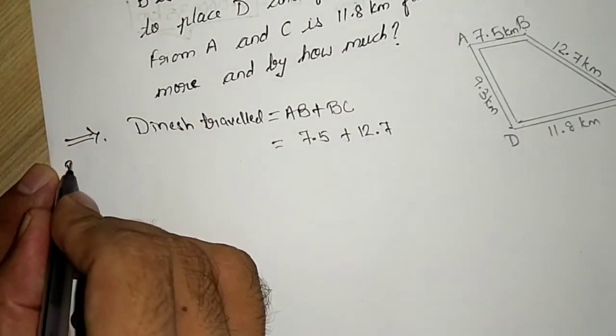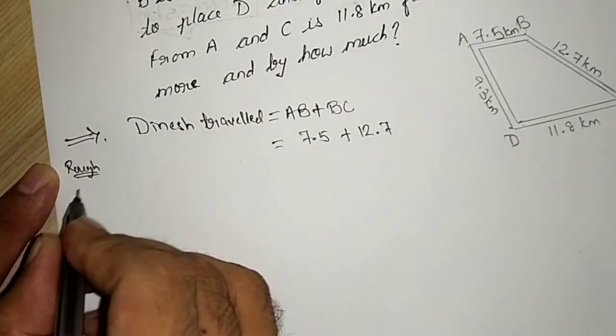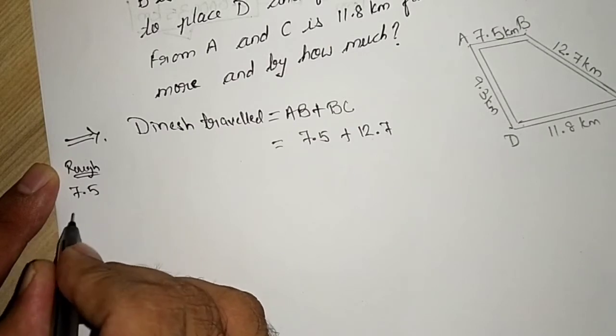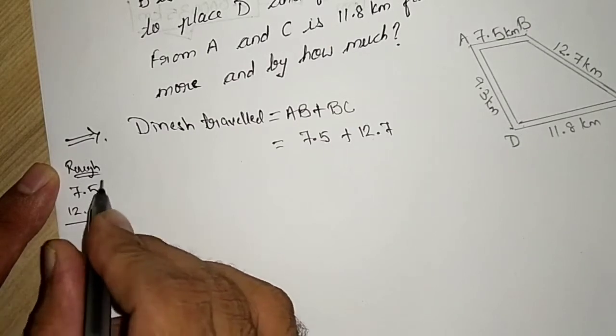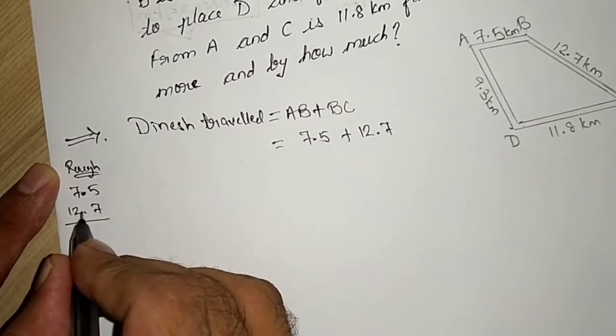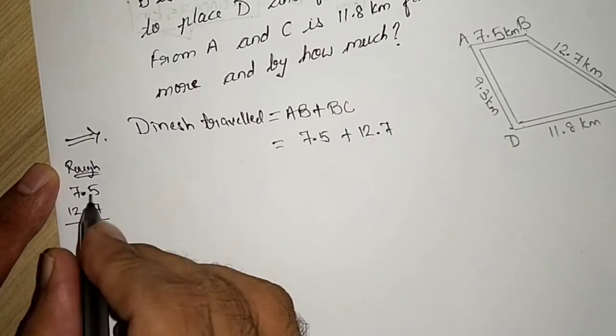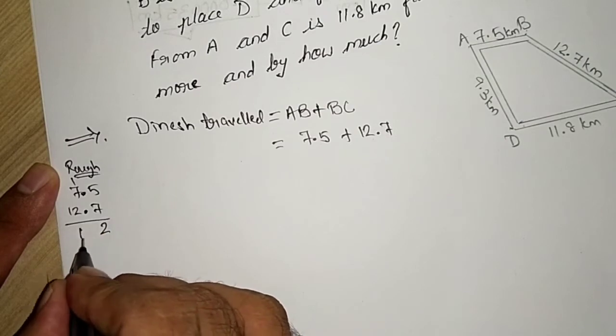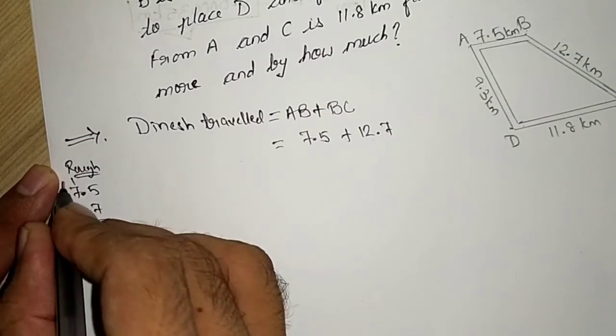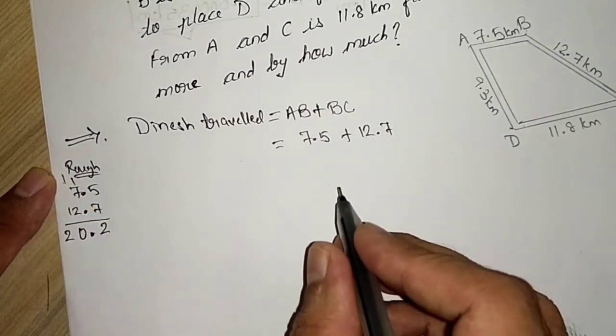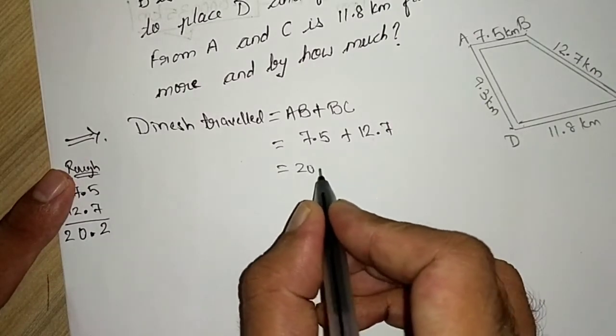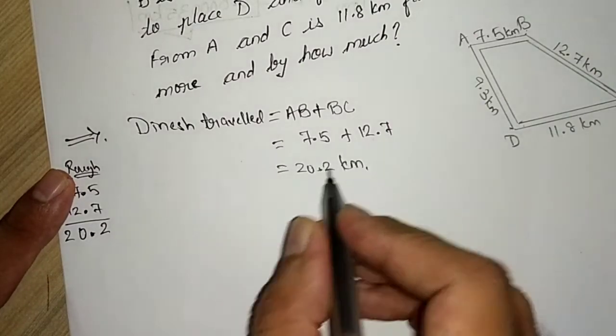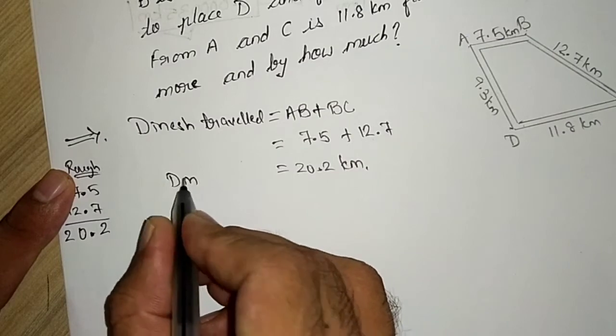I am doing rough here, 7.5 and 12.7. I have told you decimal must be below the decimal. 7 plus 5 is 12, 1 carry, 7 plus 1, 8 plus 2, 10, 0, 1 carry. So he travelled 20.2 km. Dinesh.